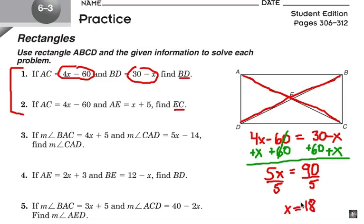Now, reread the question, and are we done? No, we needed to find x, but we're really looking for BD. BD is 30 take away x. 30 take away 18 must be 12.